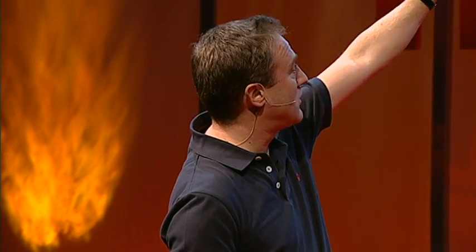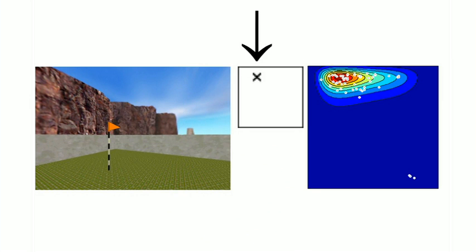And what you see, for example, if the flag was where that cross was in a small square environment, and then you ask people to say where it was, but you've made the environment bigger, where they think the flag had been stretches out in exactly the same way that the place cell firing pattern stretched out.